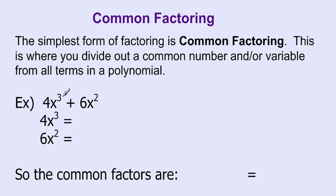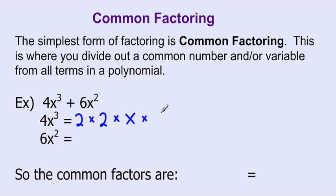Let's look at the example 4x cubed plus 6x squared. If we take the factors of 4x cubed, it's going to look like 2 times 2 times x times x times x. So 2 times 2 is 4, and x times x times x gives us x cubed. So 4x cubed can be written as 2 times 2 times x times x times x, and that is its simplest form.